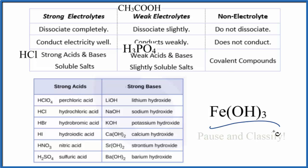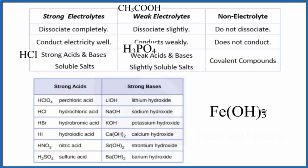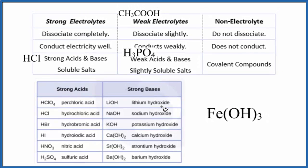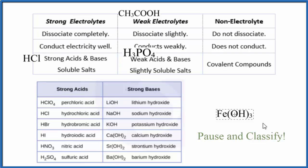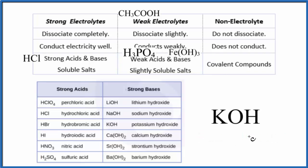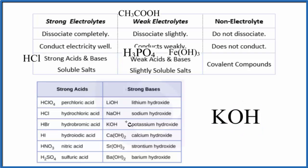What about Fe(OH)3? When we see the OH group bonded to a metal, we know it's going to be a base. We look at our list of strong bases, and it's not on the list. That means it's a weak base, and because of that, it's a weak electrolyte. How about KOH? Again, we have the OH bonded to a metal — potassium hydroxide. We look in our list of strong bases, and here it is. So it's a strong base, which means it's a strong electrolyte.